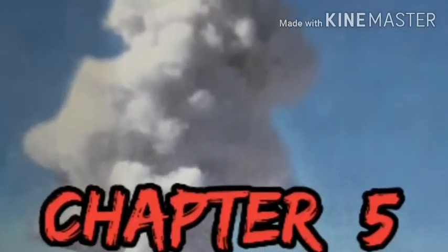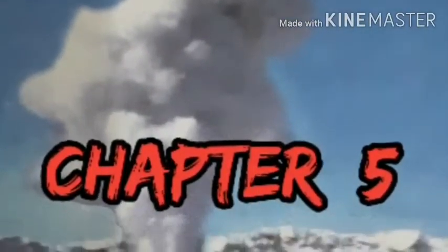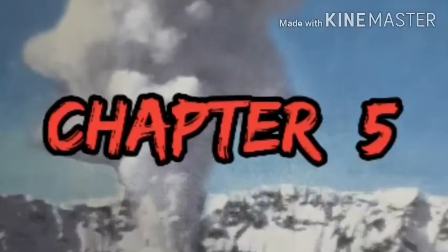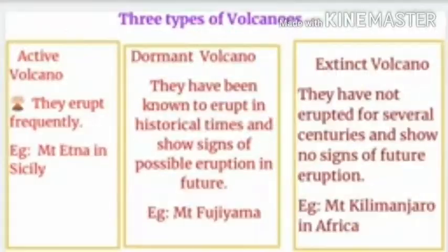Hello students, today we will learn about the different types of volcanoes. This categorization is based on the frequency of their eruption. The types are active volcanoes, dormant volcanoes, and extinct volcanoes. Active volcanoes are presently in an active state and have erupted in the recent past.